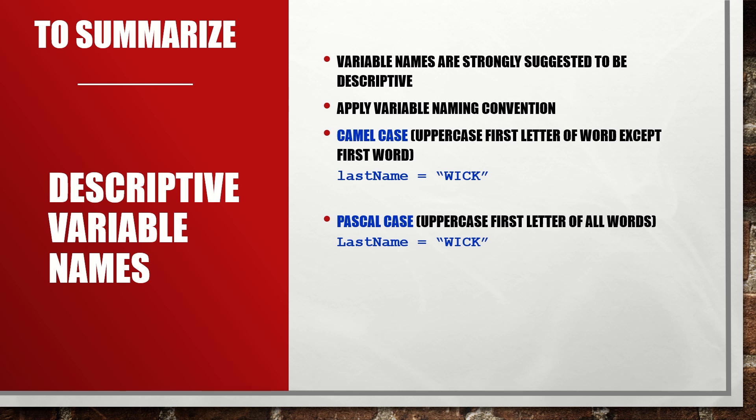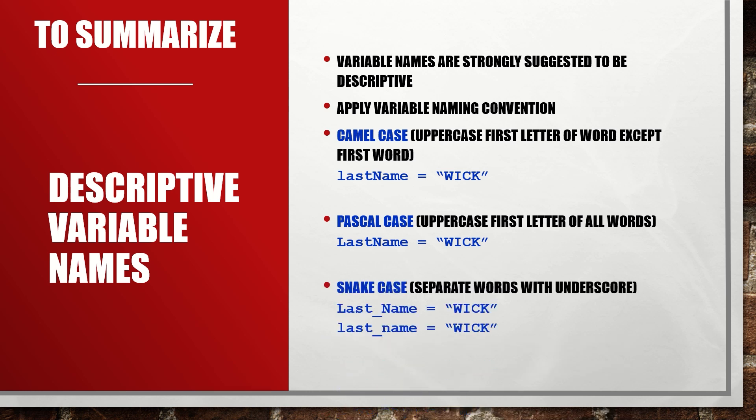We also have snake case, which separates words with an underscore. We can use Pascal case combined with snake case, which gives 'Last_Name' with an underscore, and we also have all lowercase 'last_name' with both words separated by an underscore.